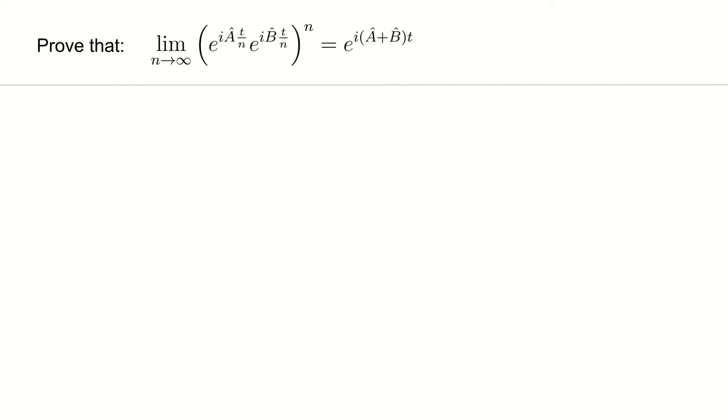Proof of Trotter's formula. Let A and B be Hermitian operators. Then, for any real-time t, we want to prove the following expression.